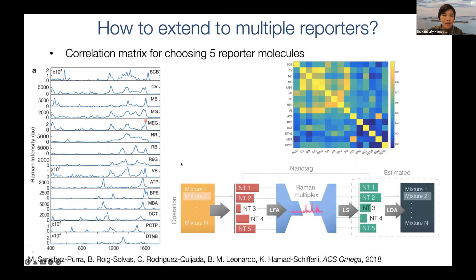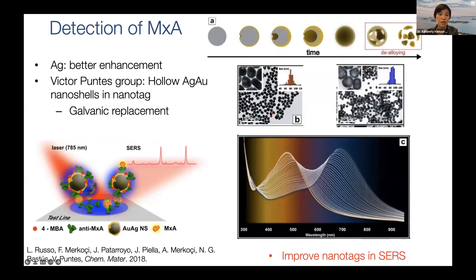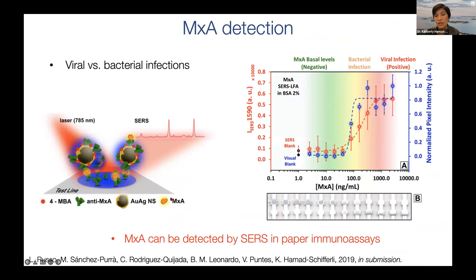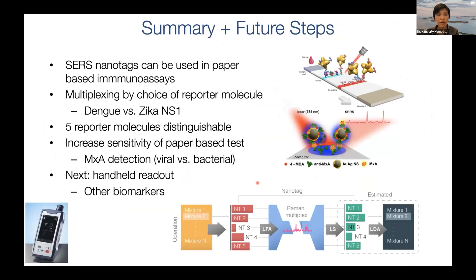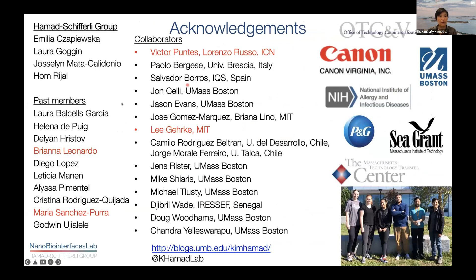We've also extended this work: we've looked at multiplex reporters beyond two, developing ways to choose reporters with minimal spectral overlap and methods to separate spectra in mixtures. We've also partnered to use gold-silver nanoshells, taking advantage of silver's high enhancement factor and gold's biocompatibility, to detect MxA — a protein that can distinguish between viral and bacterial infections. In summary, SERS can be used in this paper format in a multiplexed way to distinguish between diseases, and our further work with improved nanoparticles and techniques to distinguish between multiple reporters means we can move on to more diseases. Thank you to my group, the NIH, and UMass Boston.